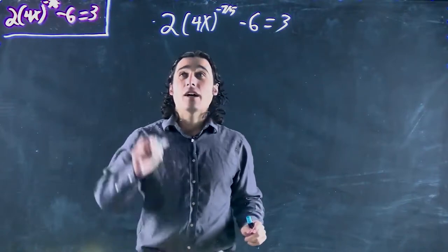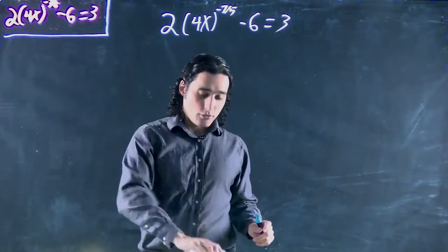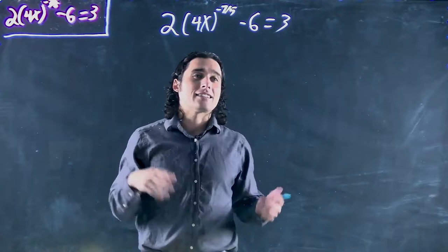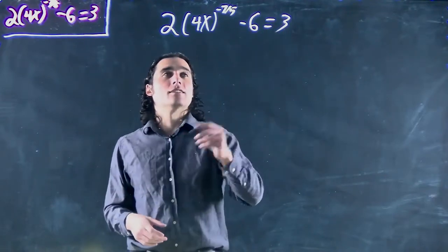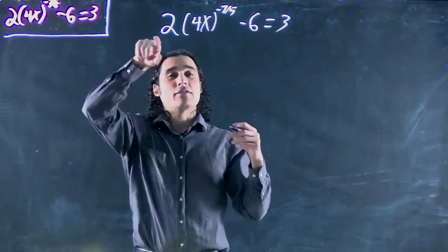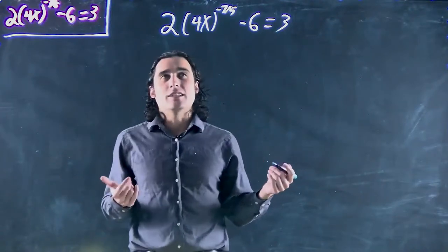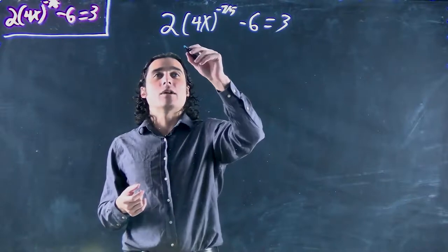Well as always, if I want to get to that x, I got to get rid of everything else. So first I'm gonna have to add 6 to both sides and we're gonna have to divide by 2, and in fact I'm gonna do that all in one step just because we've been doing these kind of problems for a while now.